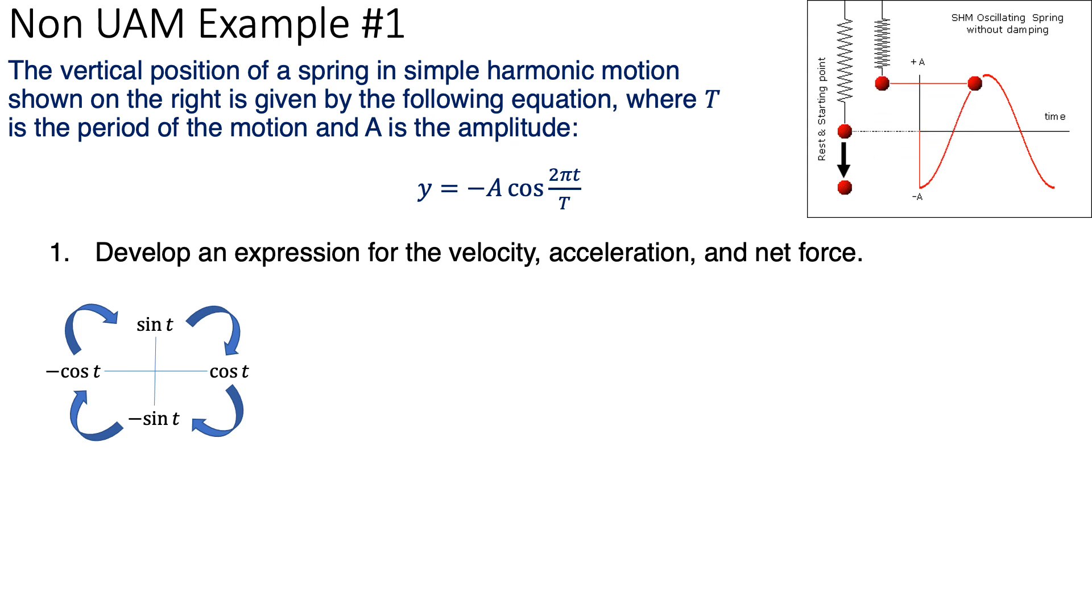So, our function is negative cosine. That means that the velocity is going to be the derivative of that. And the derivative of negative cosine is sine. And don't forget that we have to take the inner derivative of the function and multiply it out. Now, let's figure out what the acceleration is. Well, if I derive the velocity, I'm deriving a sine function. And the derivative of sine is cosine. And once again, I multiply out the inner derivative. And that's the acceleration.